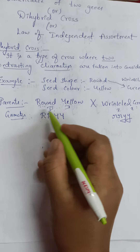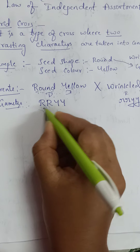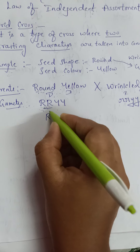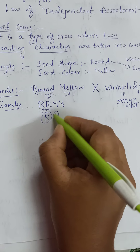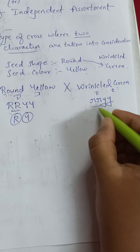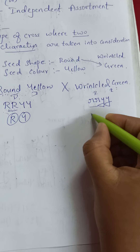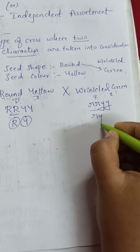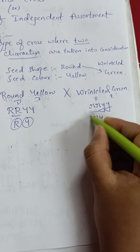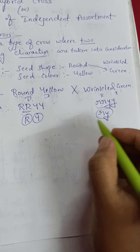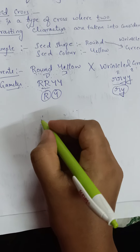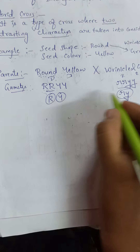In monohybrid cross we take one character and only two letters, whereas here we get four letters. From the two capital R's we take one R as common, and one capital Y as common — giving the gamete RY. Similarly from the recessive parent with two small r's and two small y's, we take one small r and one small y as common, giving the gamete ry. These are the gametes from each parent.